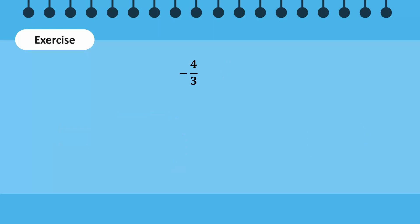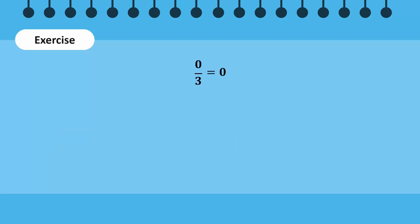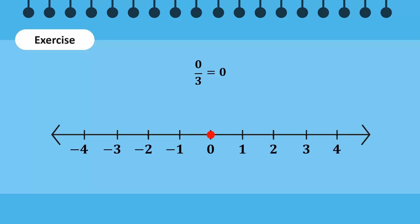Similarly, minus 4 over 3 is written in mixed fraction form as shown. However, since the number is negative, it lies between consecutive integers minus 2 and minus 1. This line segment is then divided into 3 equal parts. Recall that we move to the left for negative numbers, so minus 4 over 3 is represented by this circle. 0 over 3 is equal to 0, so it is simply represented at the 0 mark on the number line.